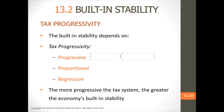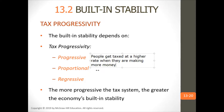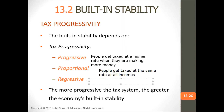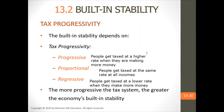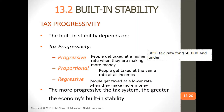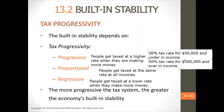Progressive taxes are when people get taxed at a higher rate when they are making more money. Proportional is when people get taxed at the same rate at all incomes. Regressive is when people get taxed at a lower rate when they make more money. For progressive, for example: 30% tax rate for $50,000 and under, and 50% tax rate for $500,000 and over.